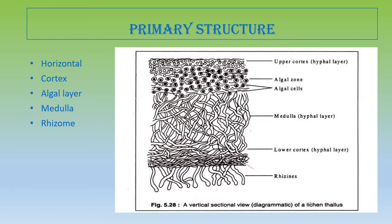Looking at the primary structure of lichen: lichens are of two types — homomeric and heteromeric. In homomeric lichen, there is no differentiation into different layers; there is a uniform single layer where algal cells are entangled in the hyphal mass. In heteromeric lichen, which is the more complex form, the structure is divided into various strata. The very upper layer — the upper cortex — has tightly packed hyphal filaments and acts as a protective layer.